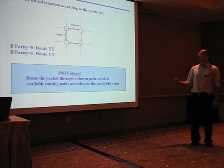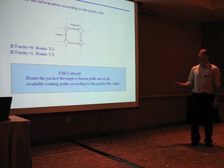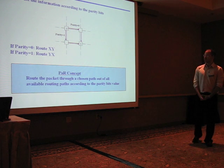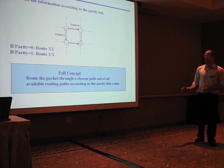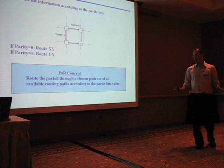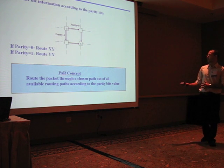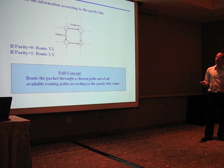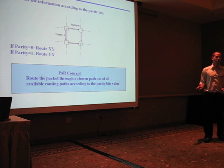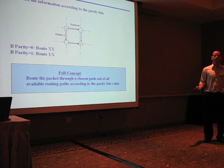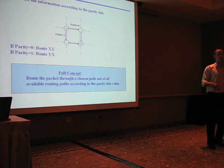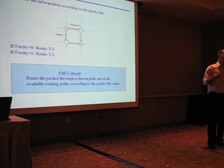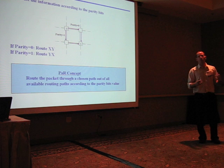This is the basic concept of our method: to route the packet through the chosen path, out of all available routing paths, according to the parity bit's value. Notice that we do not transmit the parity bit. It is actually embedded in the routing path. The routing path contains the information of the parity bit.